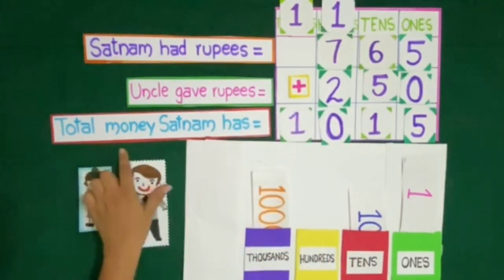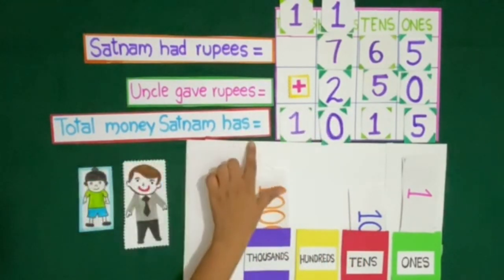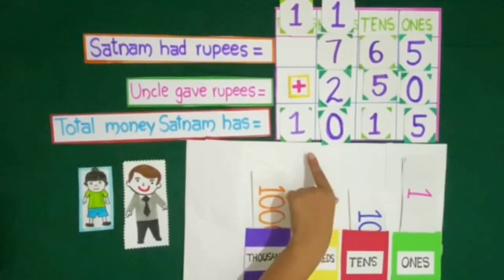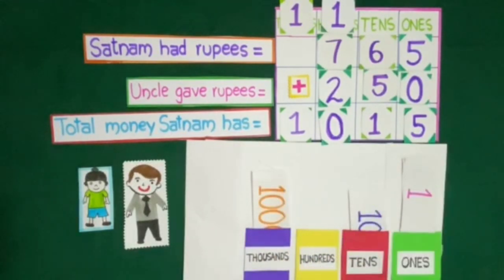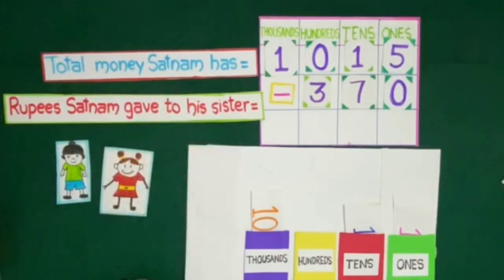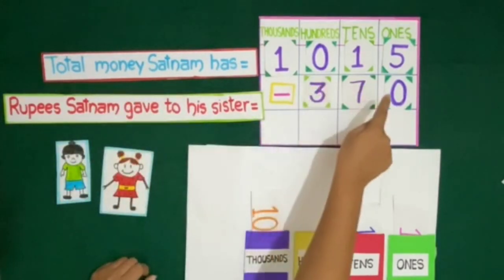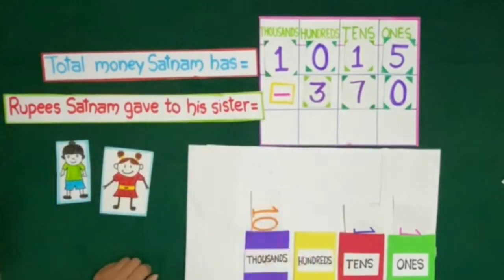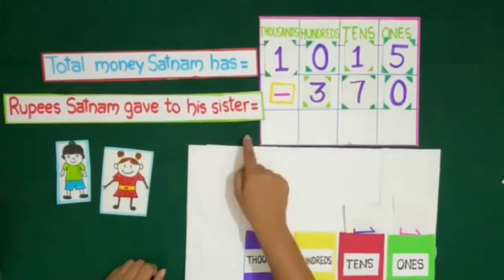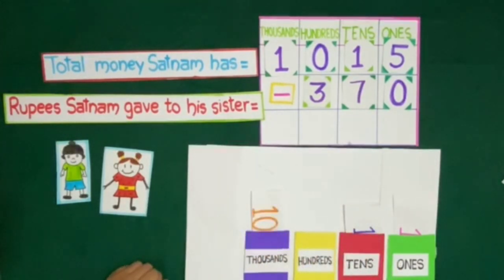The total money Satnam has is equal to 1015 rupees. Now we will give 370 rupees to his sister.